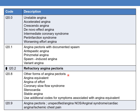I20.8 covers other forms of angina pectoris. Whenever the physician documents angina equivalent, angina of effort, coronary slow flow syndrome, stenocardia, or stable angina, you need to code I20.8. When coding I20.8, you also need to code additional symptoms associated with angina equivalent using additional codes.